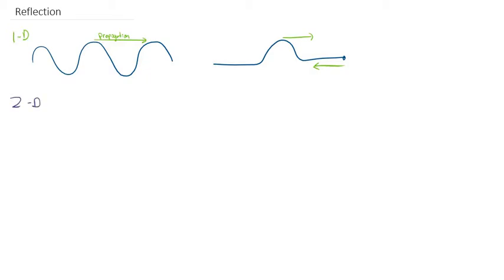So again, to be clear, on our one-dimensional wave, we had a two-dimensional picture, because the displacement of our wave was actually in a second dimension. But the propagation of the wave only happened in one dimension.